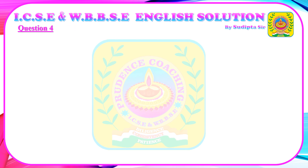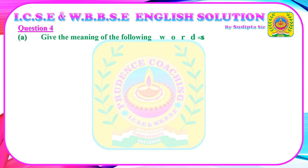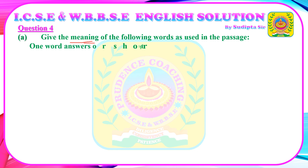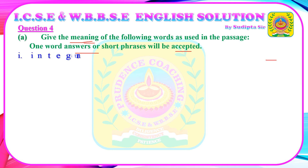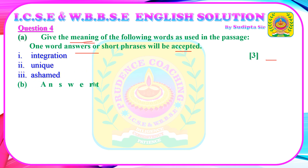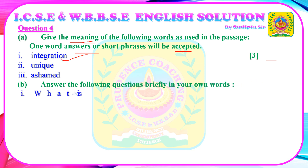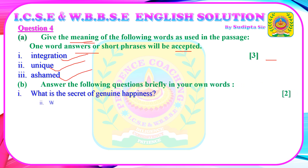After a thorough reading of the passage you will be able to answer the following questions. Question A: Give the meaning of the following words as used in the passage — one-word answers or short phrases will be accepted. You are getting 3 marks for the meanings of: 1) integration, 2) unique, and 3) assumed. Write the meanings according to the passage context, not the literal dictionary meaning.